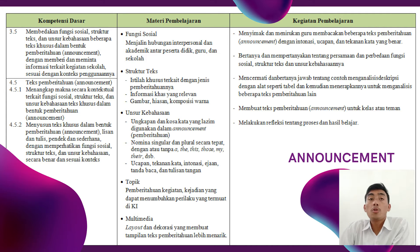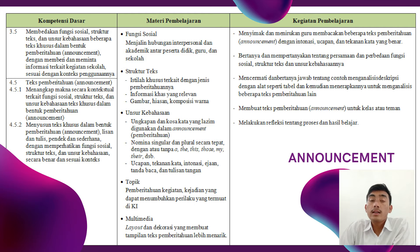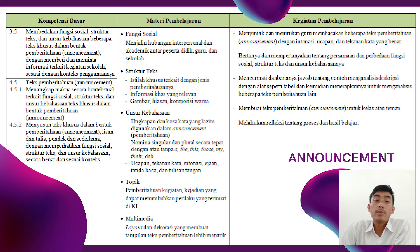The linguistic elements include the nominal singular and plural, with or without a, the, this, those, my, and so on. The next points include the final question, information, a mandate, and the pen. Then the topic covers the publication of activities that can show students' activities in school. The multimedia, layout, and decoration make the announcement text appear more interesting.